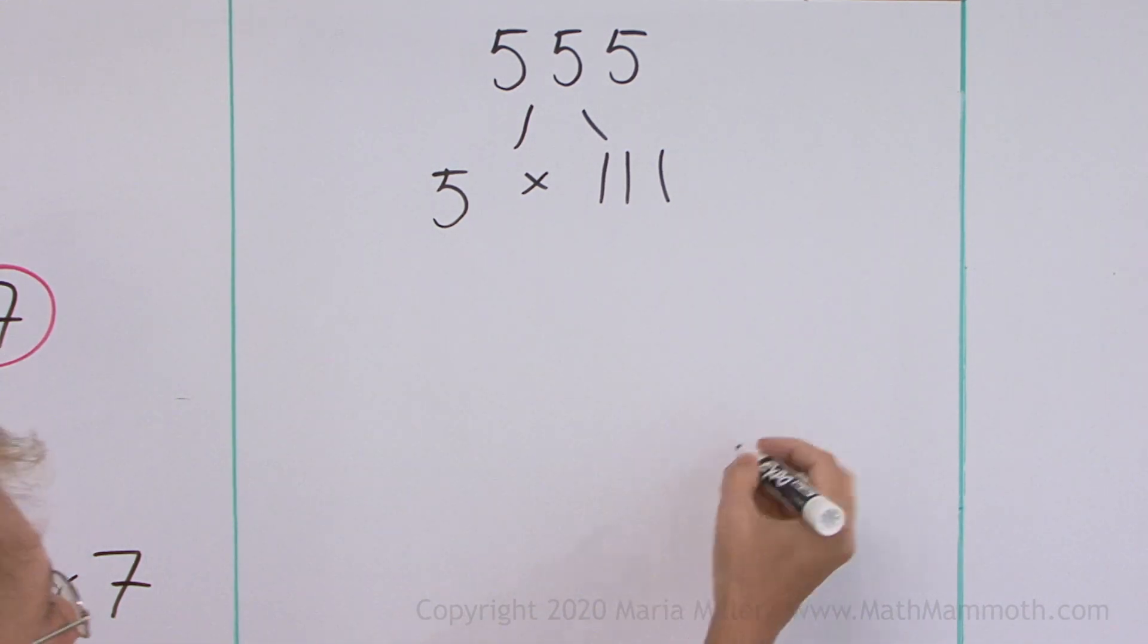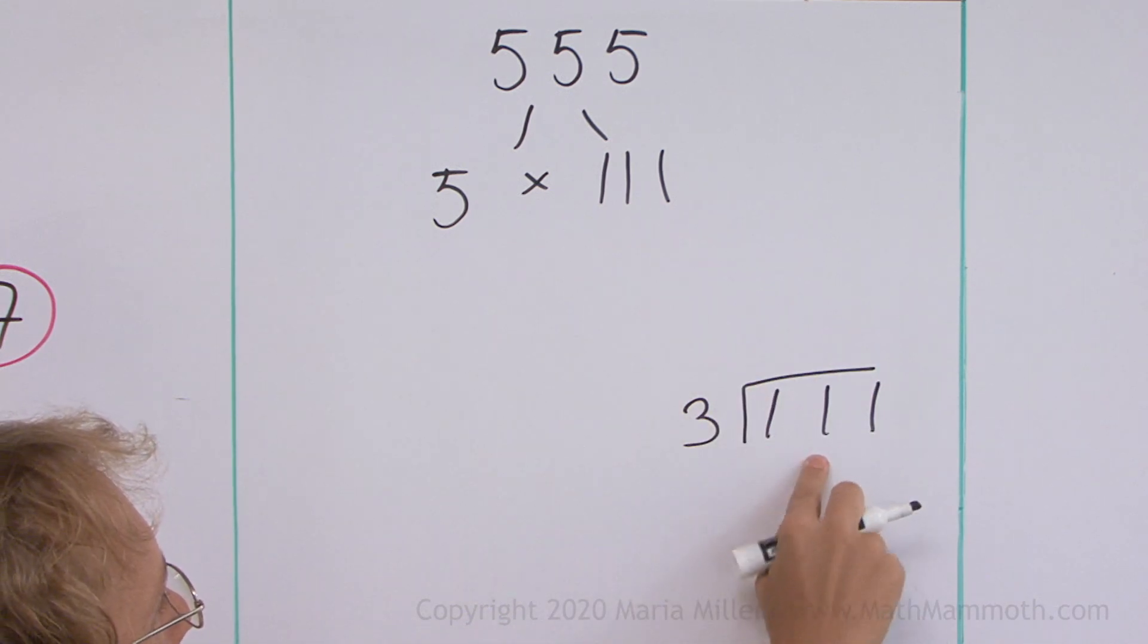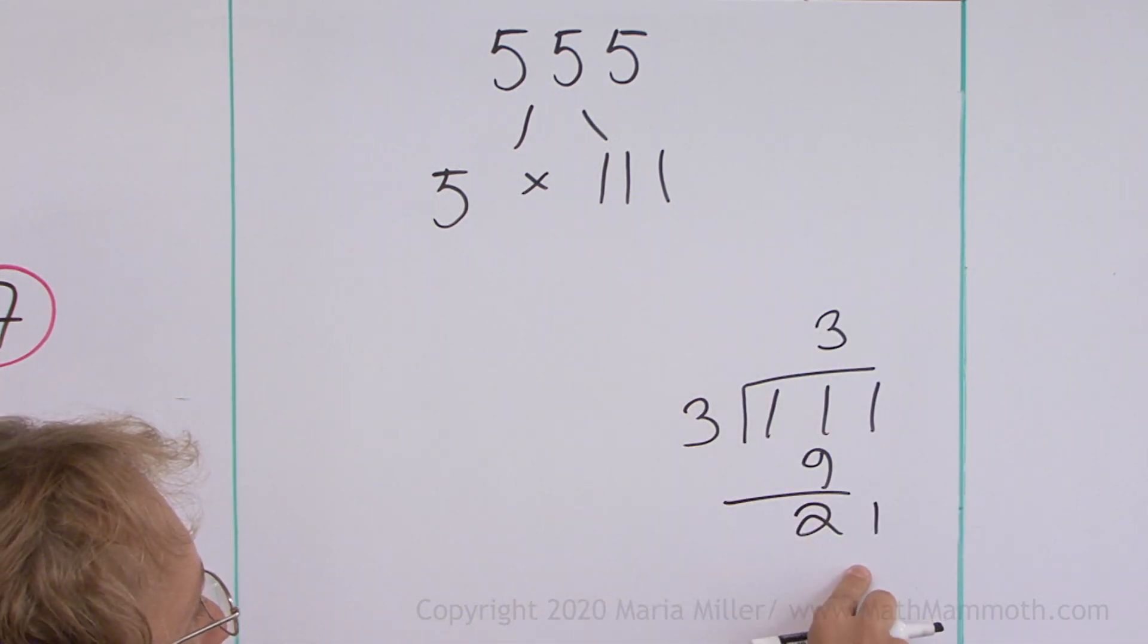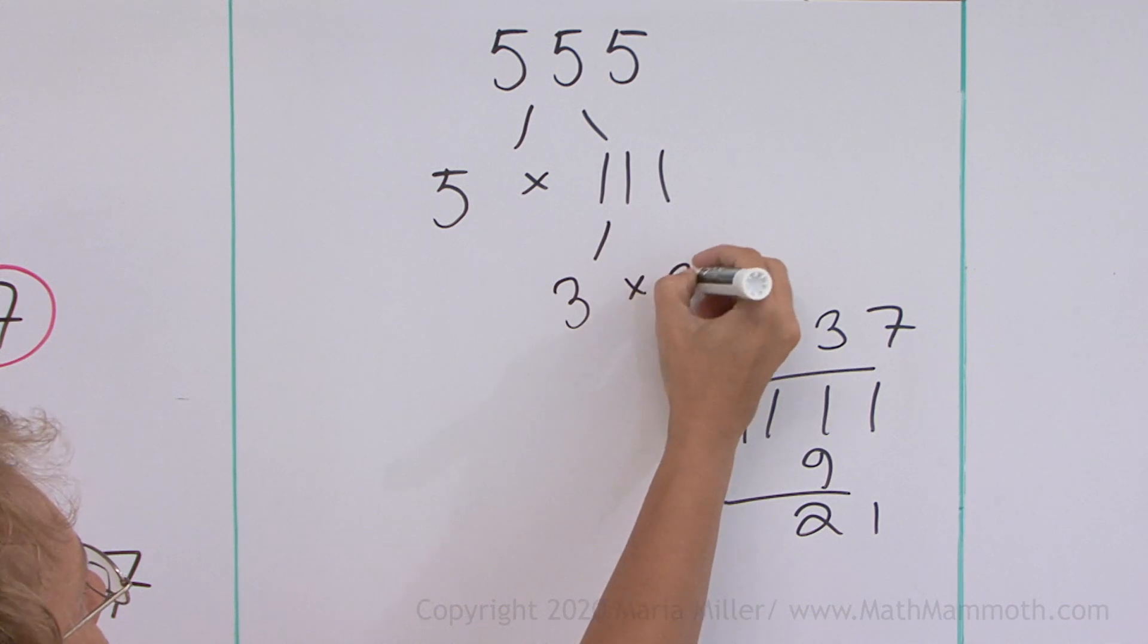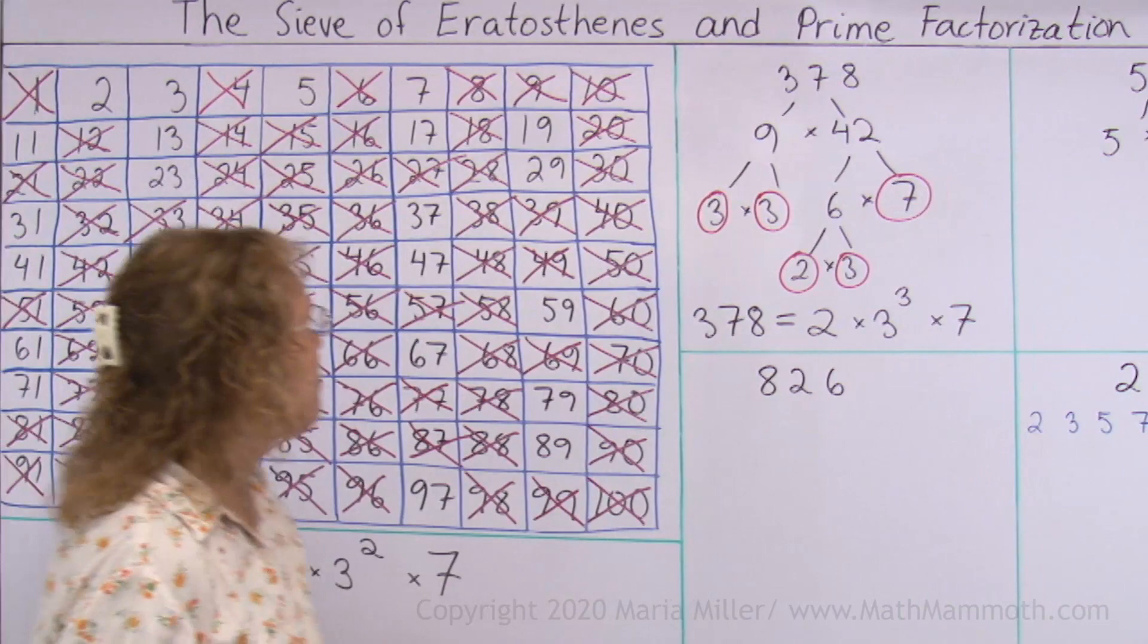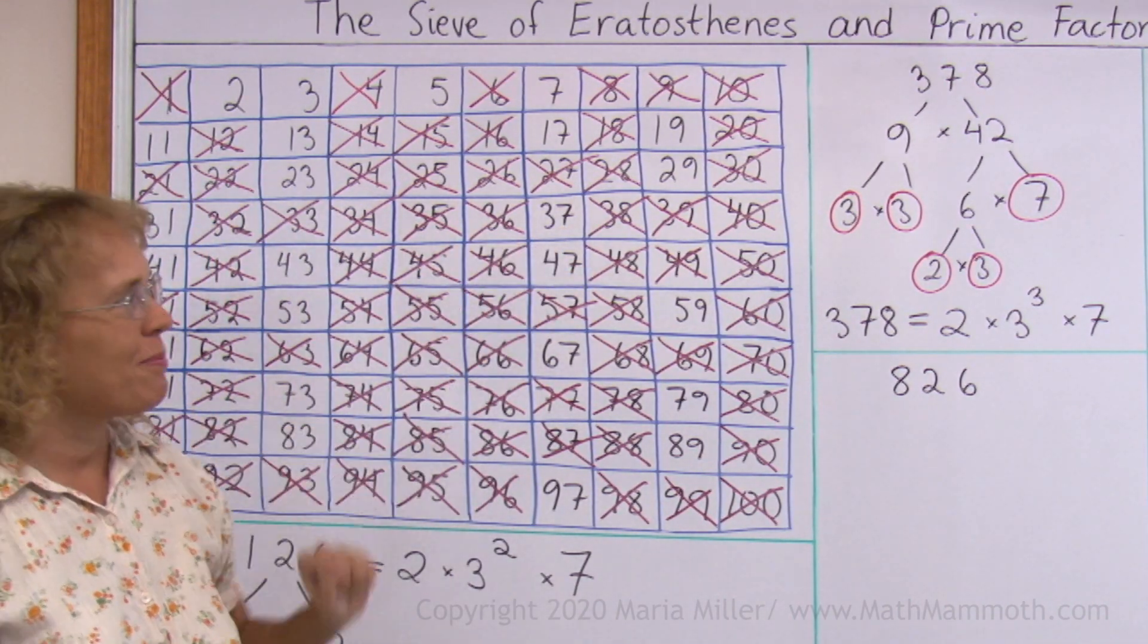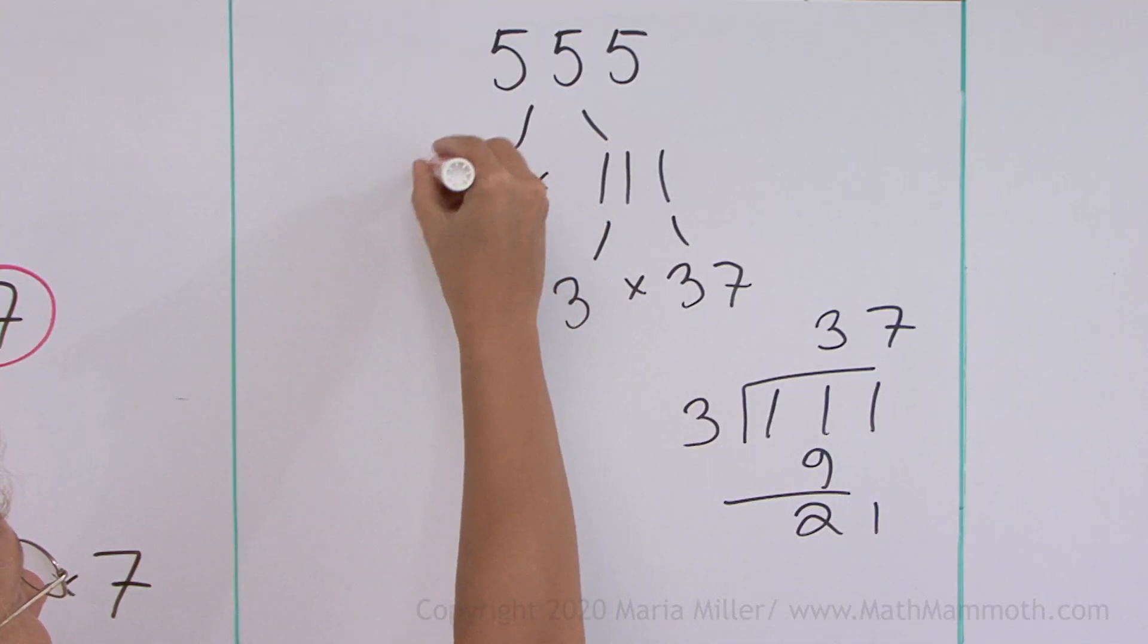So let me divide it by 3 here using long division. 3 goes to 11 three times. And 21, 7 times. So it is 37. This here is therefore 3 times 37. And 37 over here is prime. So I'm done here.